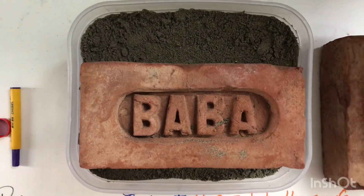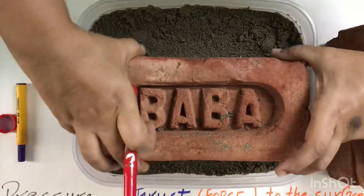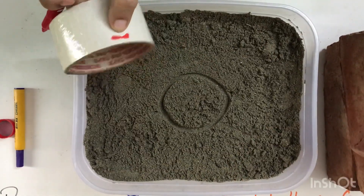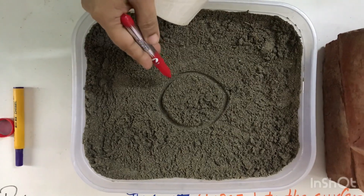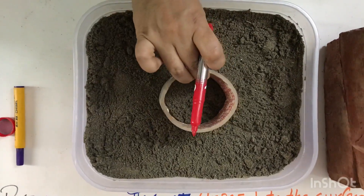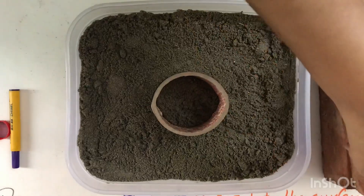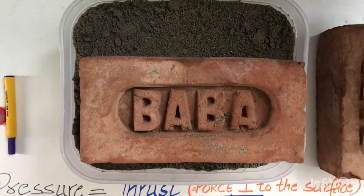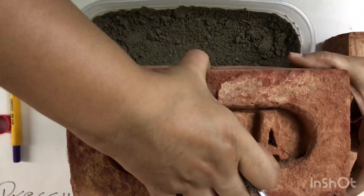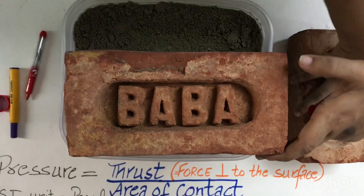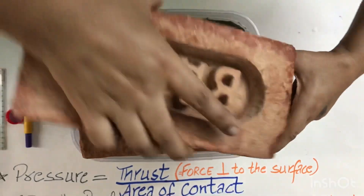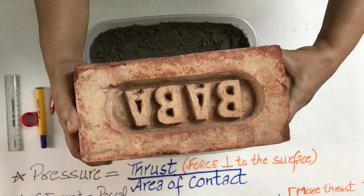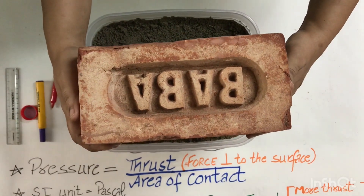Now I will put another brick over here. Let's see how much deep it has gone — it has gone this much deep inside and you can see the impression. Now I am putting it back on the same impression and increasing the force by putting three bricks over it: one brick, two bricks, and now the third brick. That means I have increased the thrust over this round object.